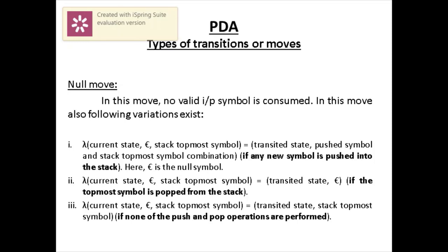The basic difference between non-null and null move is that in the null move, the second entity in the left-hand side of the transition function is always epsilon. In non-null move, the second entity is a valid current input symbol that gets consumed. But in null move, the name itself implies null — without consuming any valid input symbol of the string, the machine proceeds further. So the second entity in the left-hand side is always epsilon in null move. Remember this.